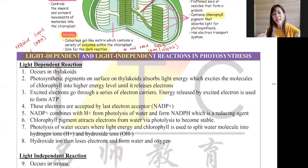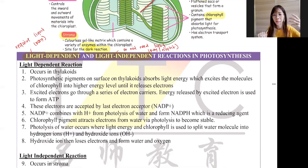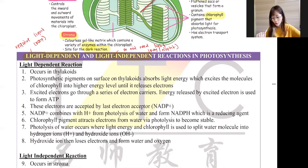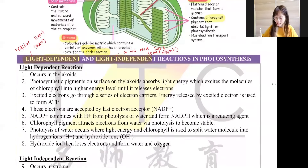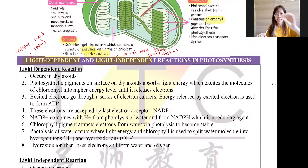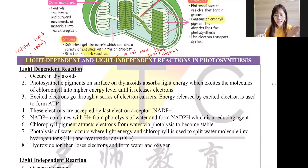We'll start from the light-dependent reaction first. Why? Because if the chloroplast has no light-dependent reaction, the plants will never carry out the light-independent reaction. Basically, when there is light, the dark reaction can occur. So first, what happens? It occurs at the thylakoids. Each thylakoid is like a level of the building as I mentioned. Now, let's talk about photosynthetic pigments.